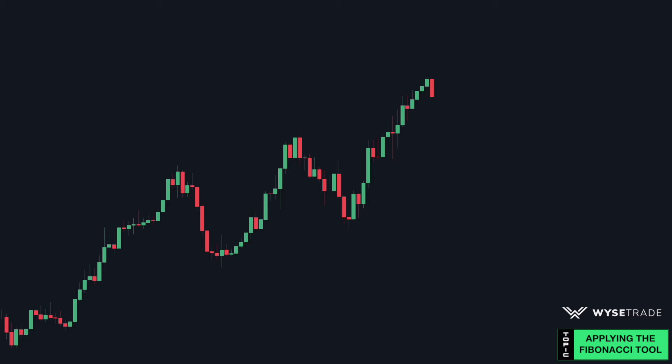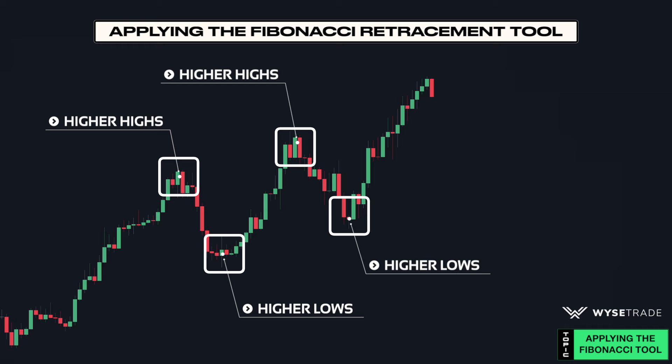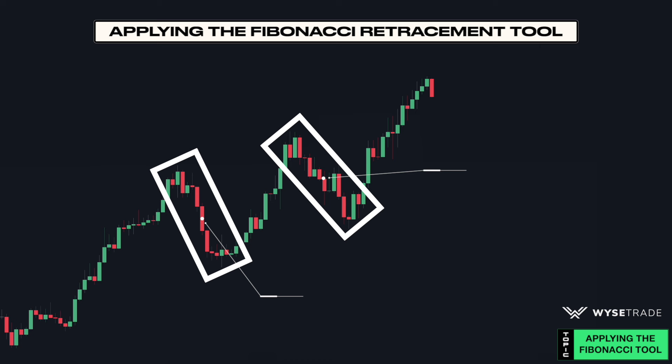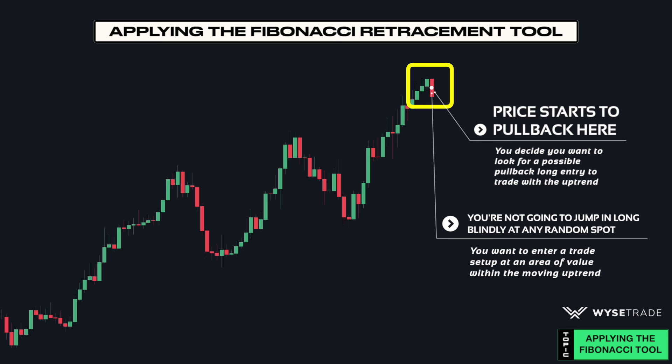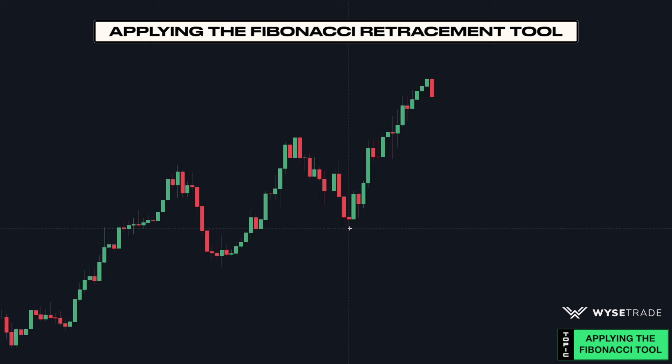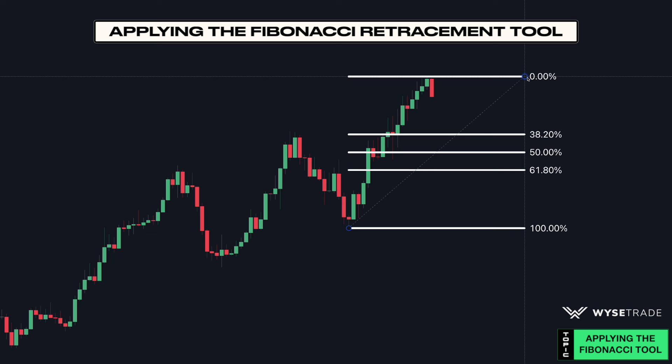In an uptrend, you have higher highs and higher lows. The runs are known as your impulse moves and the pullbacks are your corrective moves. When price starts pulling back, you want to look for a pullback long entry to trade with the uptrend. Take your Fibonacci tool, click at the recent swing low, drag it up to the recent swing high, move it a bit to the right to stretch it out, and click again to lock it in. Once price reaches any of these Fibonacci levels, look for candlestick price action followed by a trend change confirmation before taking a long entry.